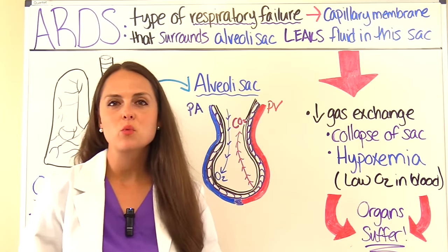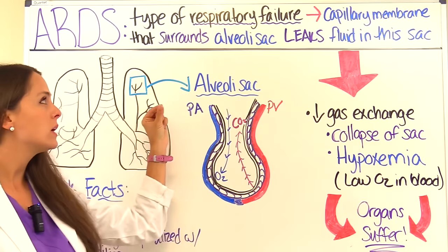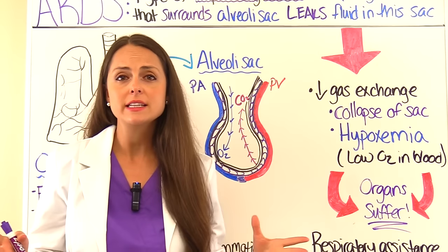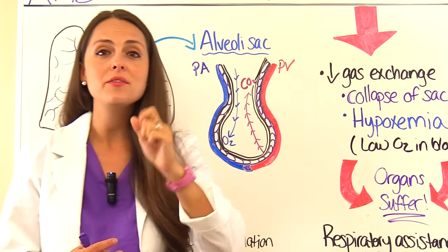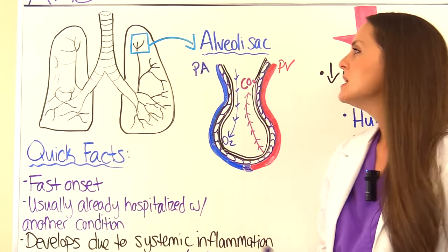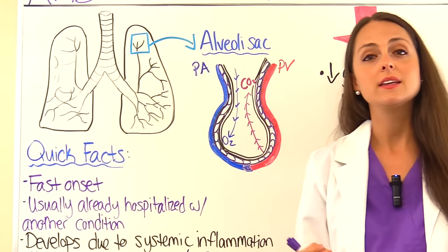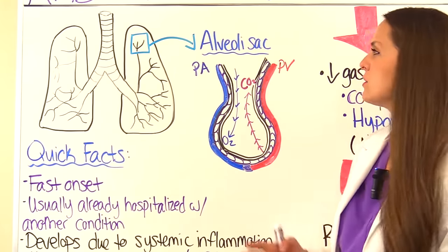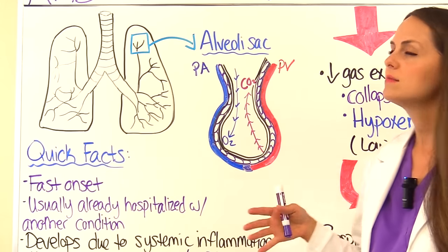ARDS is a type of respiratory failure that occurs when the capillary membrane that surrounds the alveoli sac starts to leak fluid. Whenever it leaks fluid, fluid will actually enter into the sac. That's a problem — let's review our anatomy and physiology of our lungs. The alveoli sacs are the functional unit of the lungs; this is where gas exchange occurs.